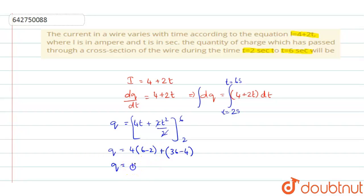It is 16 plus 36 minus 4. So you will get it as 32, so 16 + 32 gives you 48, so q will be 48 coulombs.